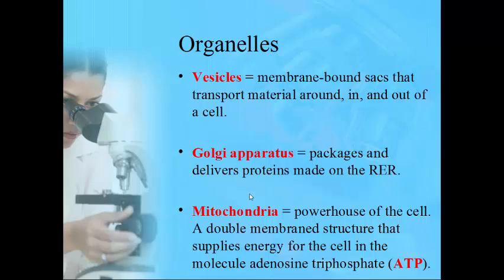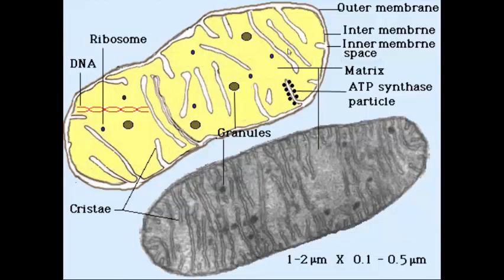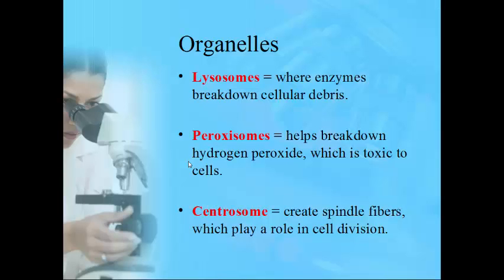Probably one of the more important organelles is the mitochondria — the phrase every science teacher uses is 'the powerhouse of the cell.' This is where cells create energy. From the food you eat, broken down through digestion, it gets chemically broken down into a compound called adenosine triphosphate, or ATP. You need to know what that compound is — ATP gives your cells energy. Without ATP, cells can't function, and if cells don't function, they die, then tissues die, then organs die.